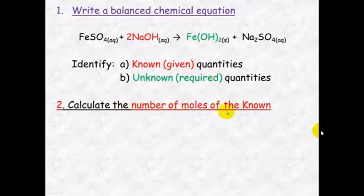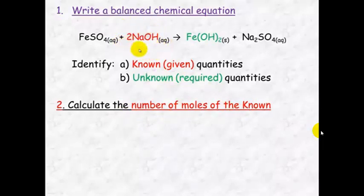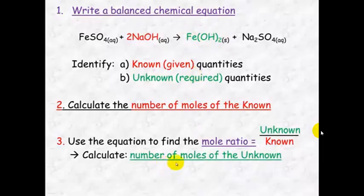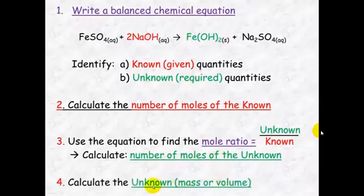You calculate the number of moles of the known using the information given. Once you've got the number of moles of the known, we can then use the mole ratio — so it's a two to one ratio — to then determine the number of moles of the unknown. Once we've got the number of moles of the unknown, it's simple just to work out the unknown's mass or volume.